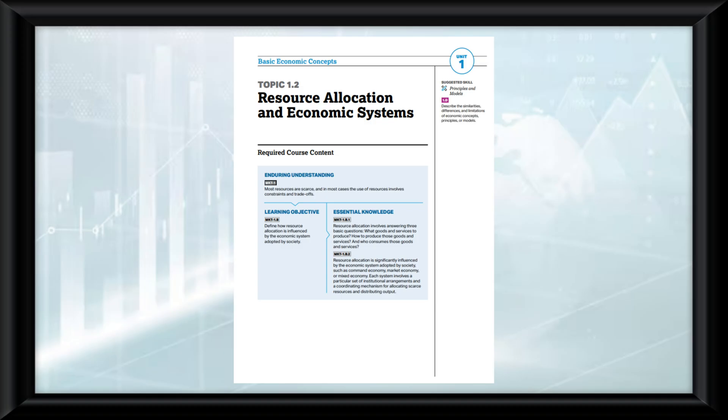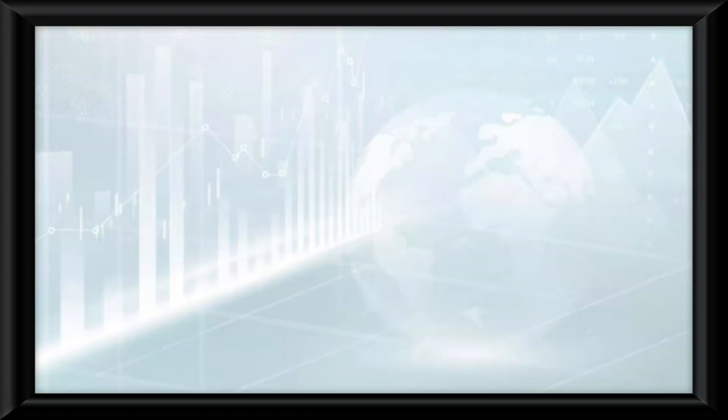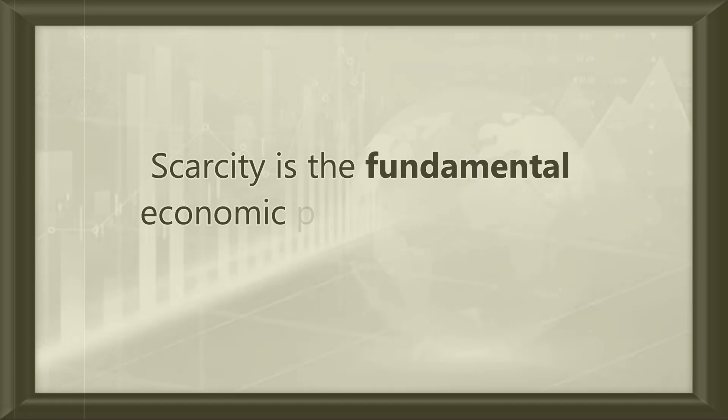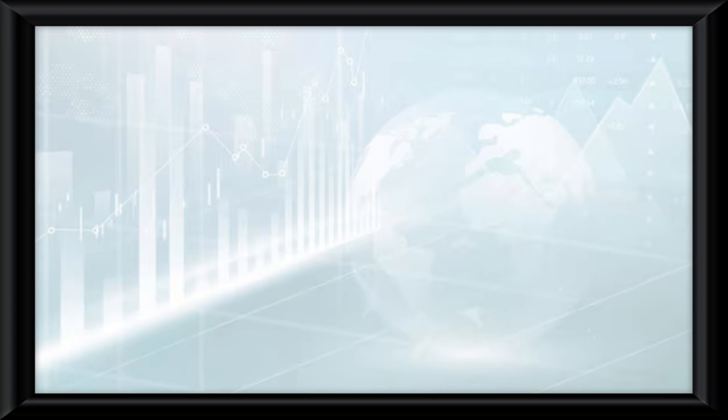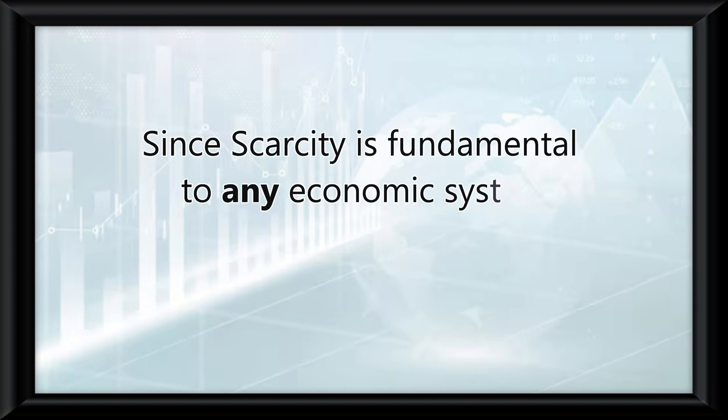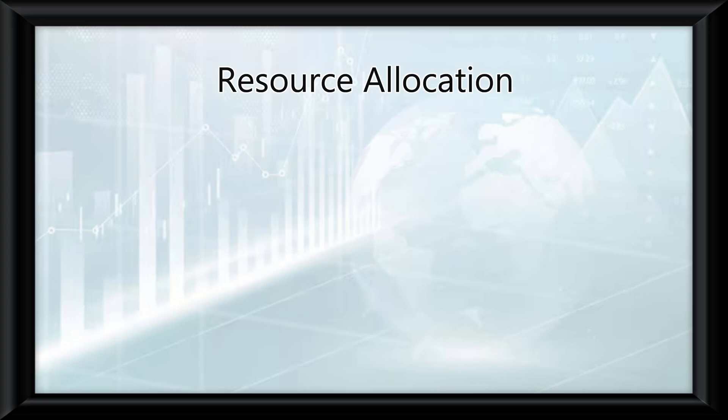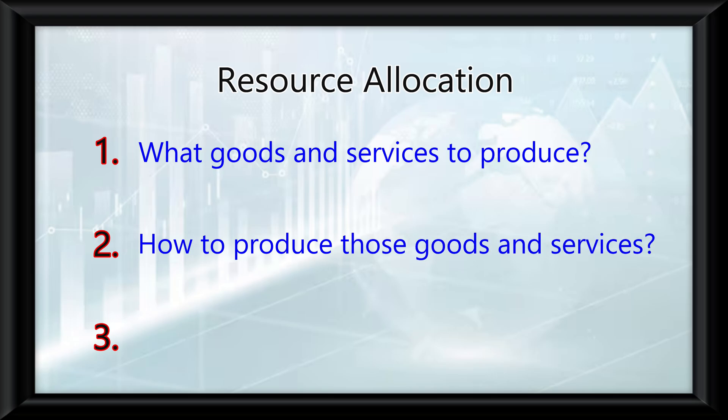Topic 1.2 is all about resource allocation in economics. If you remember back to last video, we were talking about scarcity in economics. Well, the idea here is that since scarcity is fundamental to any economic system, resource allocation must occur. Resource allocation involves answering three basic questions: What goods and services to produce? How to produce those goods and services? And who consumes the goods and services?